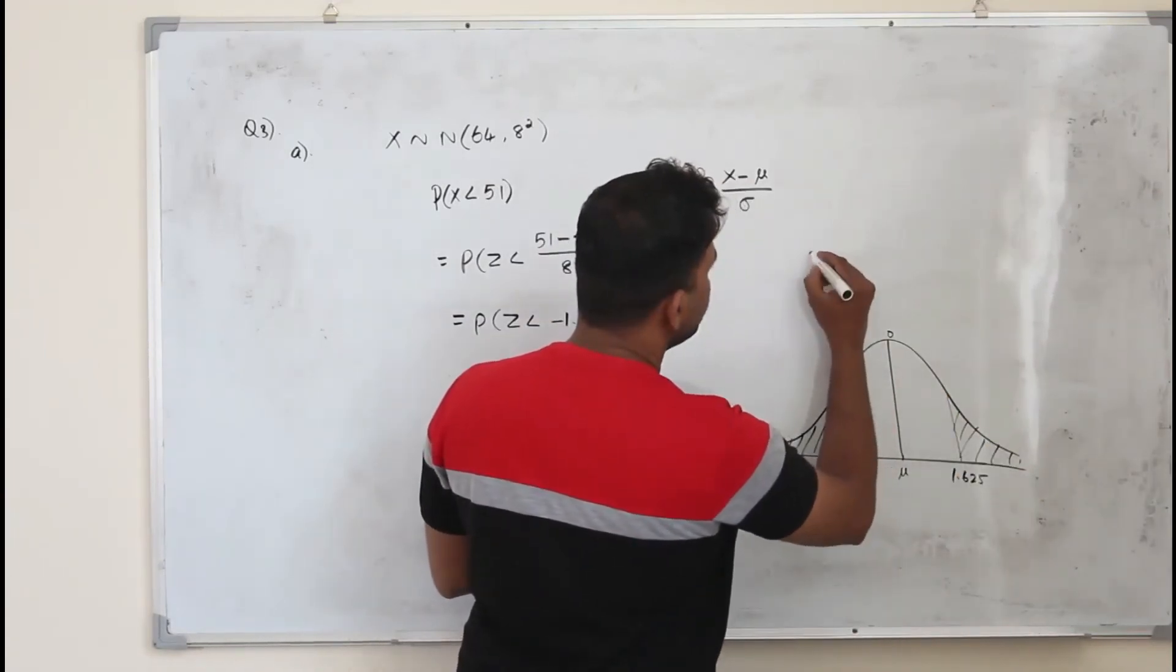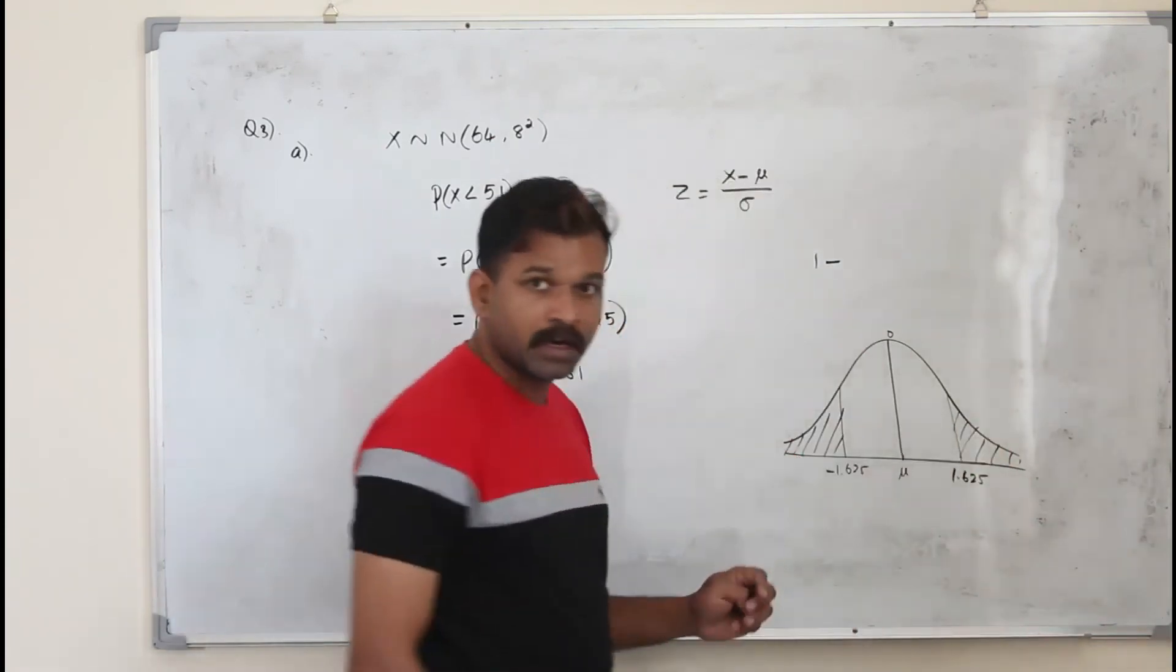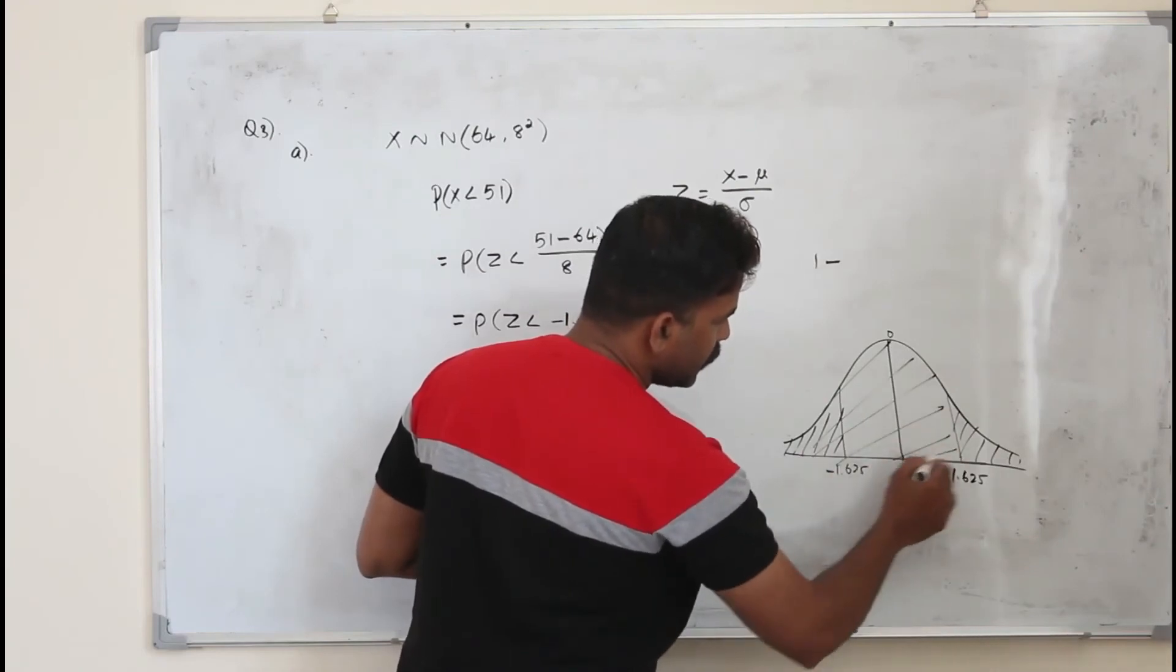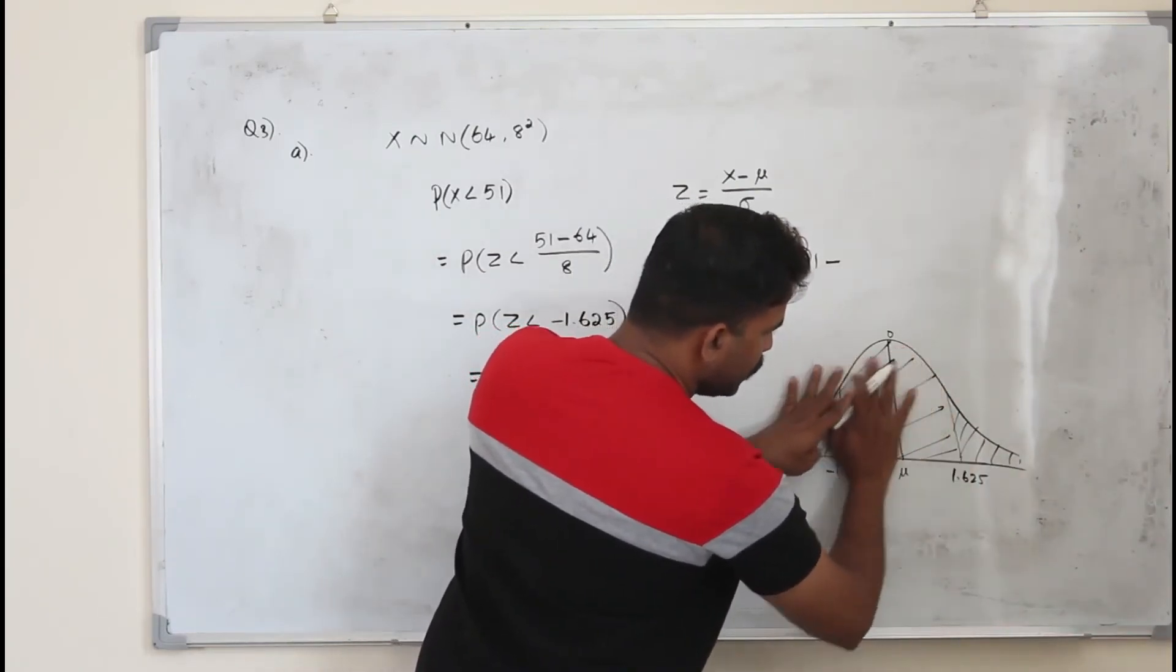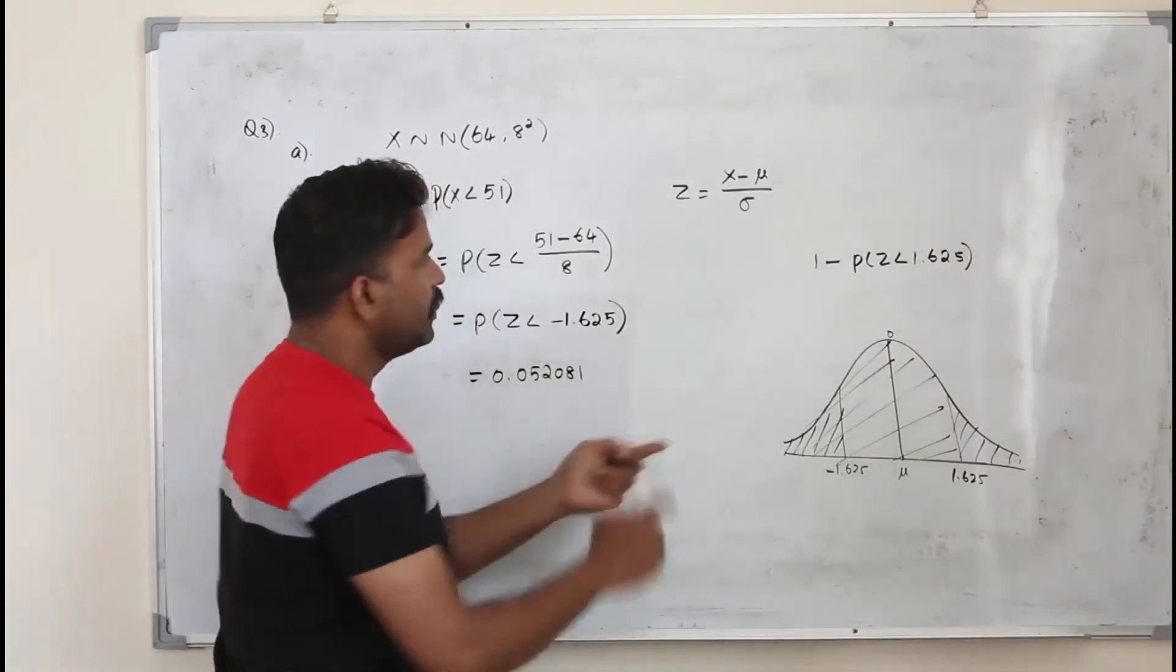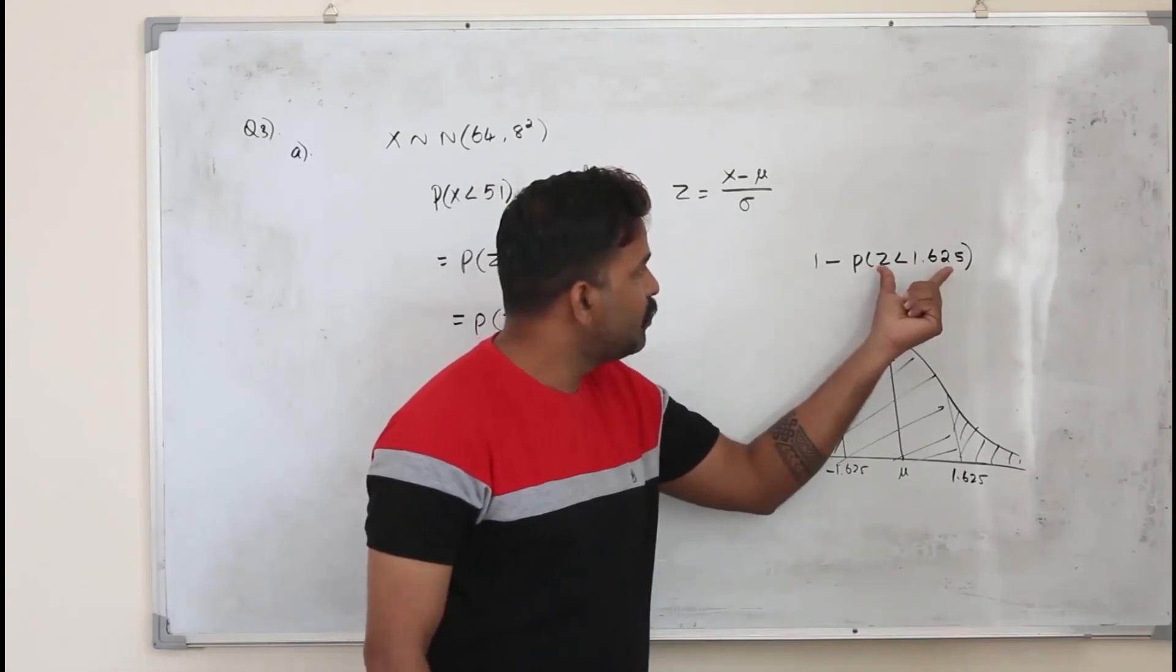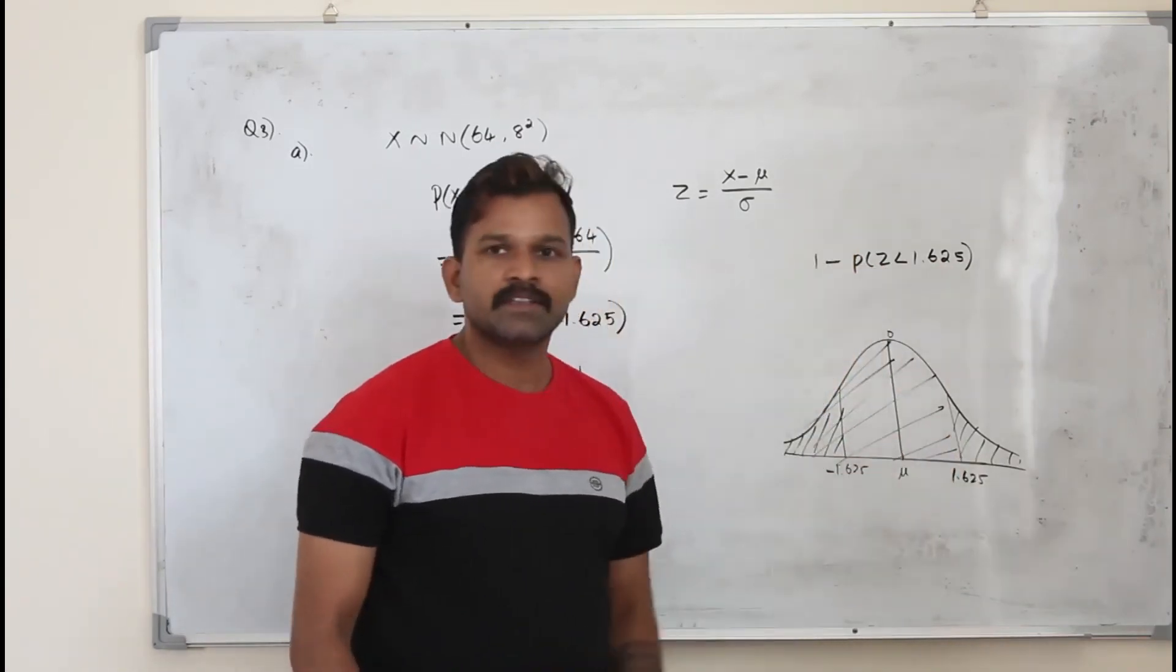So how do we find this value? You take the total value, which is 1 minus. The total area is 1 minus. You can subtract this area, this whole area. So you will be left with this. How do you find this whole area? Use the table. Instead of negative, we are going to use a positive number. So use table to find this value, subtract from 1, you will get the answer already.